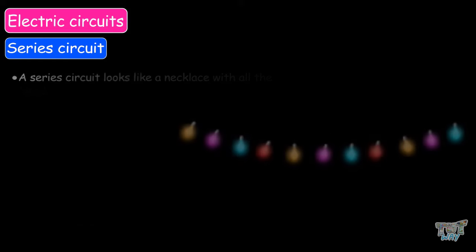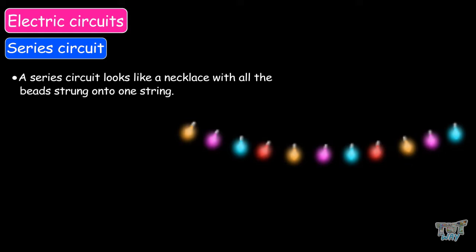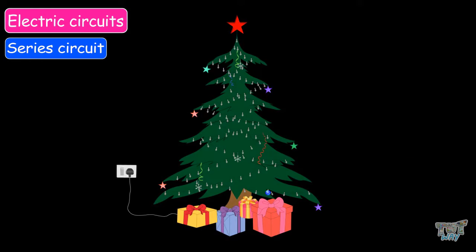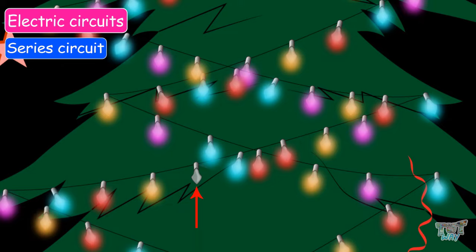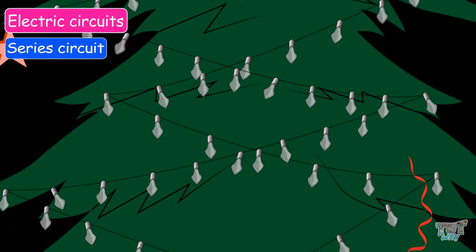A series circuit looks like a necklace with all the beads strung onto one string. Here we have an interesting example. Do you put on Christmas lights on the trees at home during Christmas? Christmas lights are connected in series. If one light stops working, the rest of the lights should go out.